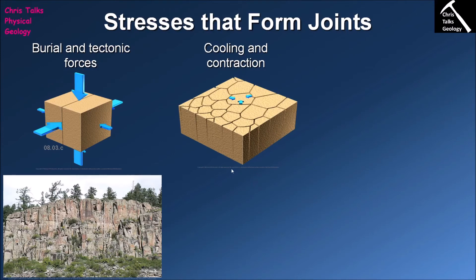The next way that joints can form is due to cooling and contraction. This is something we only tend to see in igneous rock. We can see it in some types of sedimentary and metamorphic rocks, but in the vast majority of cases most cooling cracks will be associated with igneous rocks.